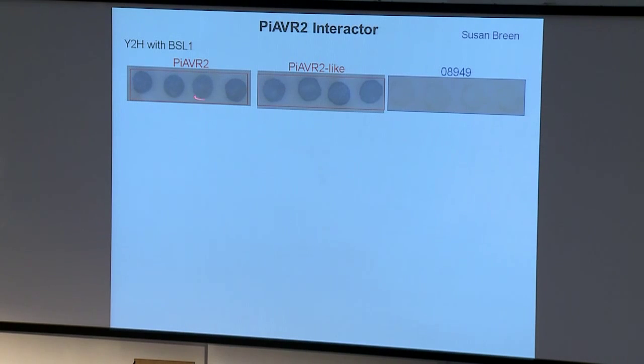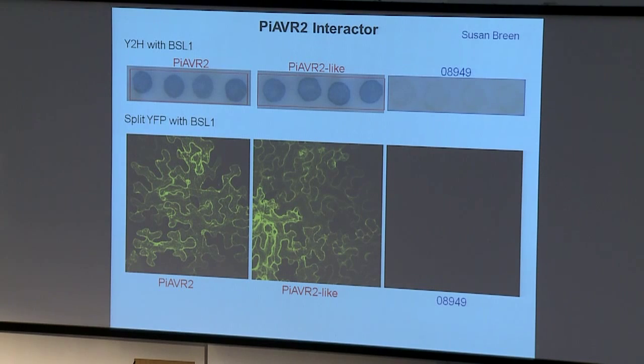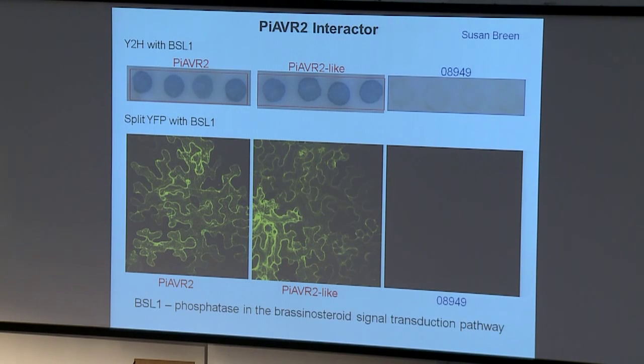Both AVR2 and AVR2-like interact with a host protein, BSL1, in yeast. A closely related effector from P. infestans shows no interaction. This pattern can be reproduced inside the plant using split YFP — interaction between AVR2 and BSL1, and AVR2-like and BSL1, but not with the other effector. BSL1 is a phosphatase involved in the brassinosteroid signal transduction pathway. There's not much in the literature implicating brassinosteroid signaling in biotic stress responses, so we're quite keen to know why AVR2 targets it — that's work ongoing by Dion Turnbull, a PhD student with a poster here.